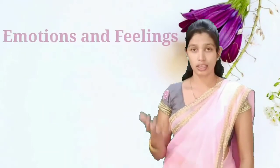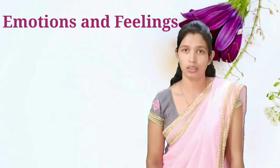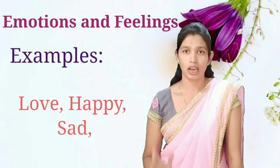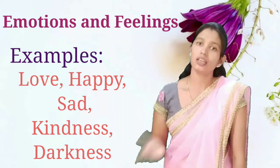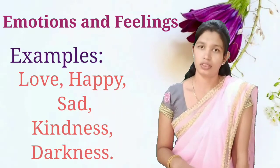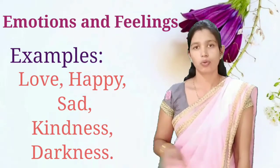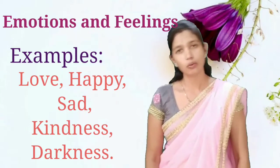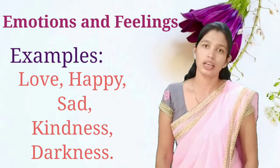Iske alawa emotions and feelings ke liye bhi kuch words refer kiye hue hain, jaisi ki love, happy, sad, kindness, darkness — yeh sare words hain jo nouns mein aate hain, in sab ko nouns kehte hain. Toh yeh huay noun ki definition with their examples.